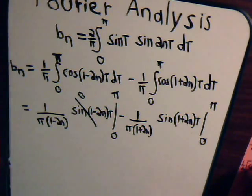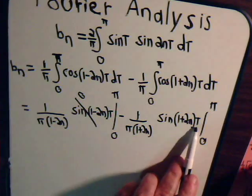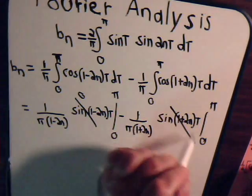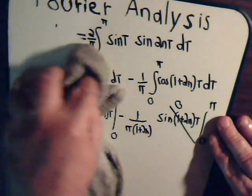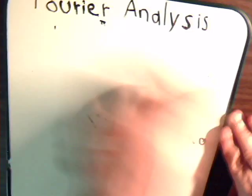Substitute pi here, that's zero. Put zero in for t, the sine of zero is zero. So indeed, b sub n comes out to be equal to zero.